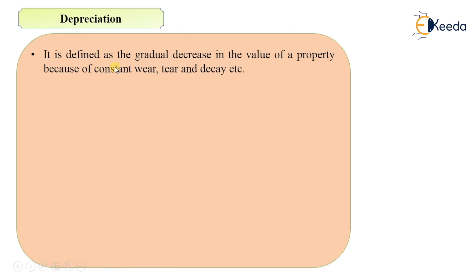Depreciation is defined as the gradual decrease in the value of a property because of constant wear, tear and decay. For example, if you constructed a building, a property or any structure, with time it may get wear, tear, or decay. Because of this the value of the property decreases, and this gradual decrease is called depreciation.